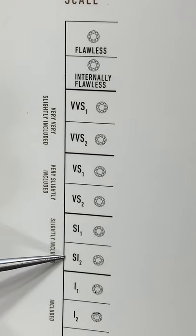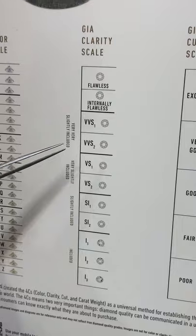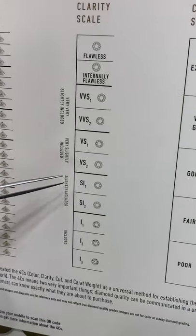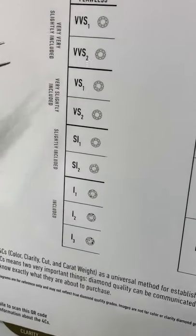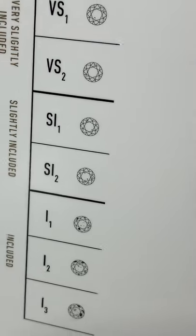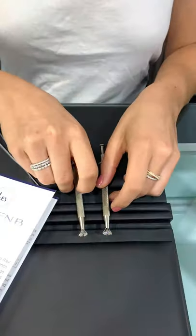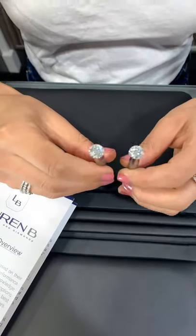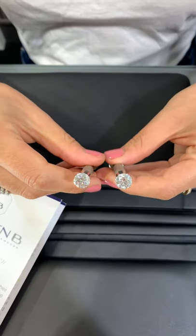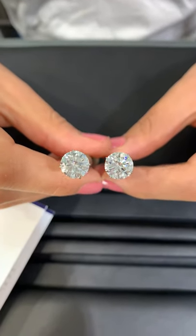Clarity is not exactly how sparkly or shiny the diamond would be, but physically the number of inclusions that are in the diamond and their location and their color. Are they in the top of the diamond or the bottom? All of those factors play a role in the actual clarity grade. One thing to note about clarity is that it is graded under a microscope. So how large the inclusions look, what color they are, and how visible they are under magnification determines the clarity grade.